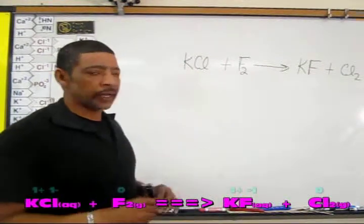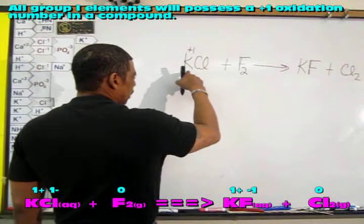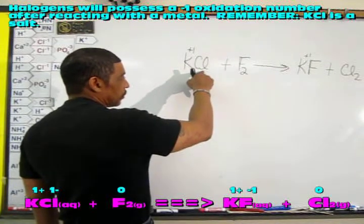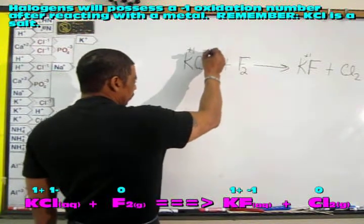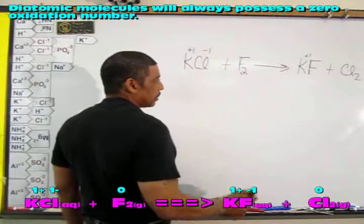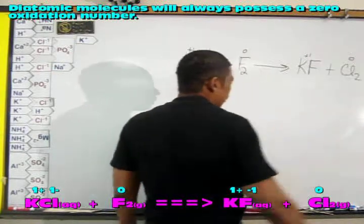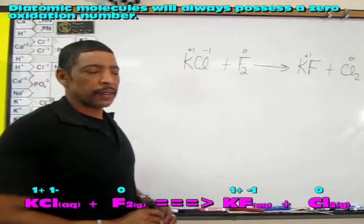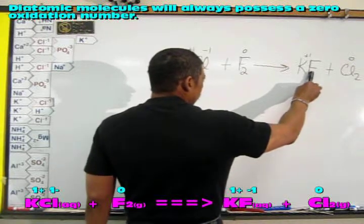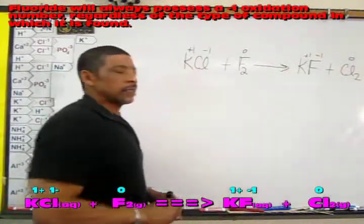To determine the half reactions involved in this particular reaction, simply write in the oxidation states. Potassium, as a group 1 element, will have a plus 1 oxidation number. For the non-metal chlorine, which is in a compound with the potassium, the oxidation number is minus 1. Fluorine, which is a diatomic element, will have a zero oxidation state. Fluorine, which is a halogen and a non-metal, as is chloride, will possess a minus 1 oxidation state.